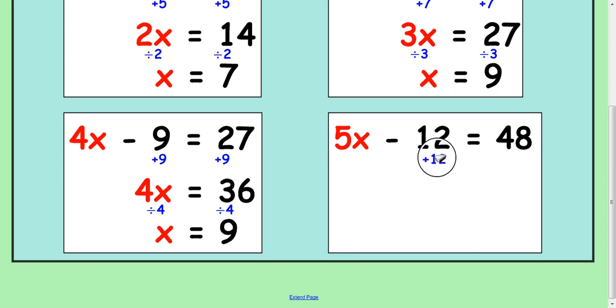Lastly, we've got a take away 12, so add 12 to both sides. And get down to 5x equals 40, add 12, that's 60. And there's your answer.